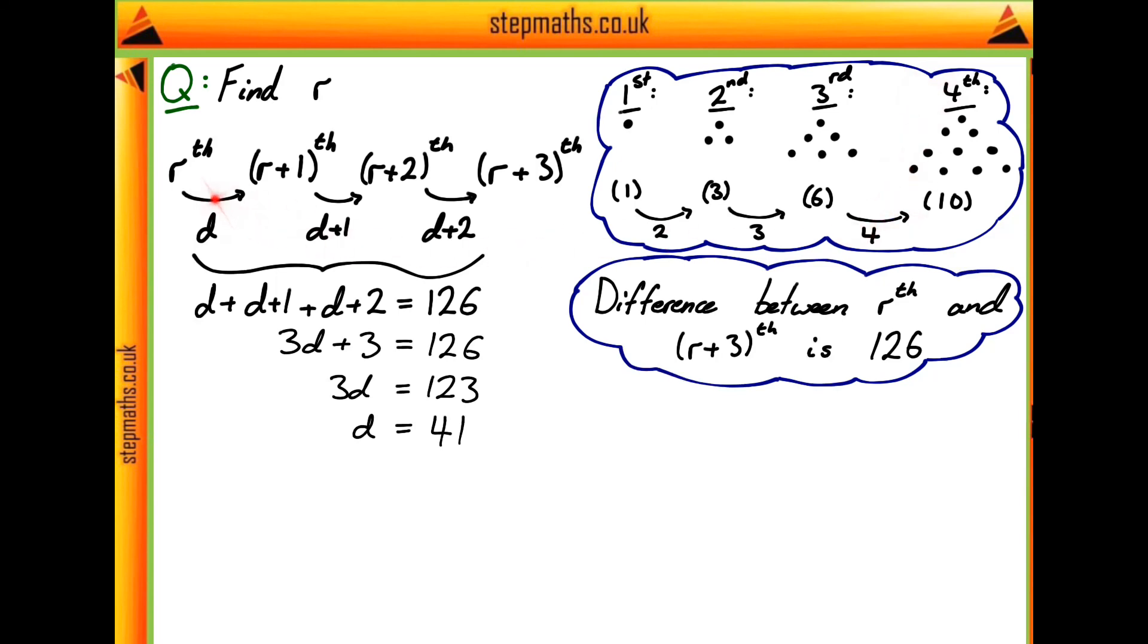So if we're going from r to r+1, and the difference is 41, it means that r+1 must be 41.